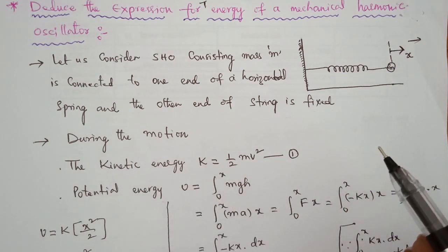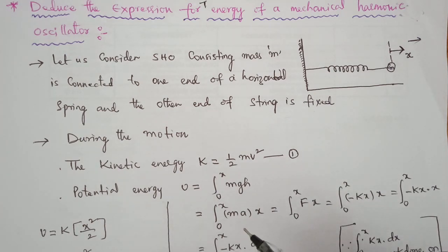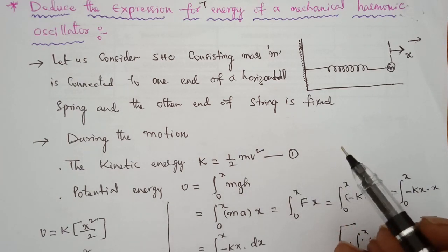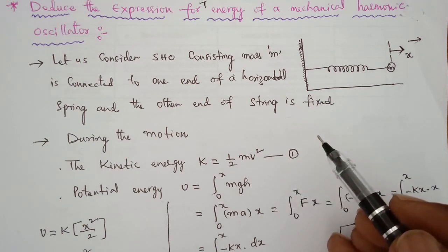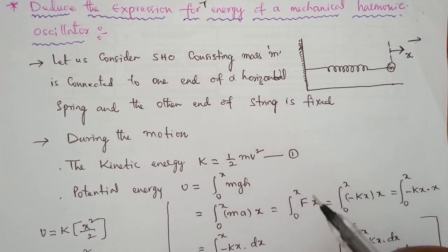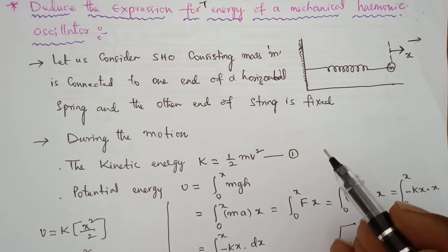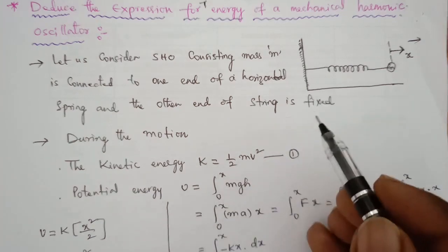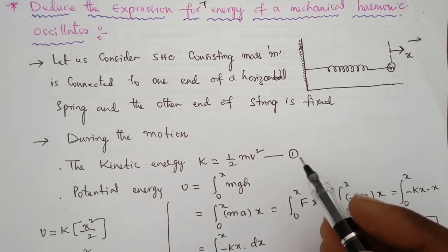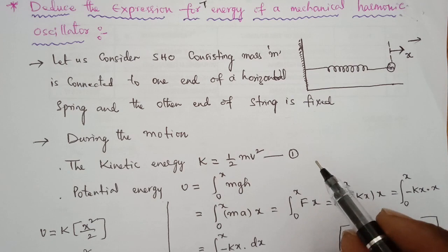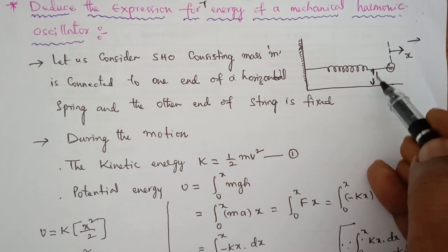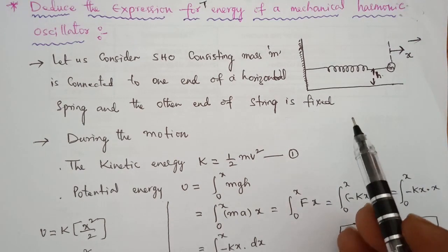In motion, if there is some height, we have potential energy. For example, a flying aeroplane in the air possesses kinetic energy and potential energy. A flying bird in the air possesses kinetic energy and potential energy. When a stone is thrown in the air, the moving stone possesses kinetic energy, and since it is at some height, it also possesses potential energy.